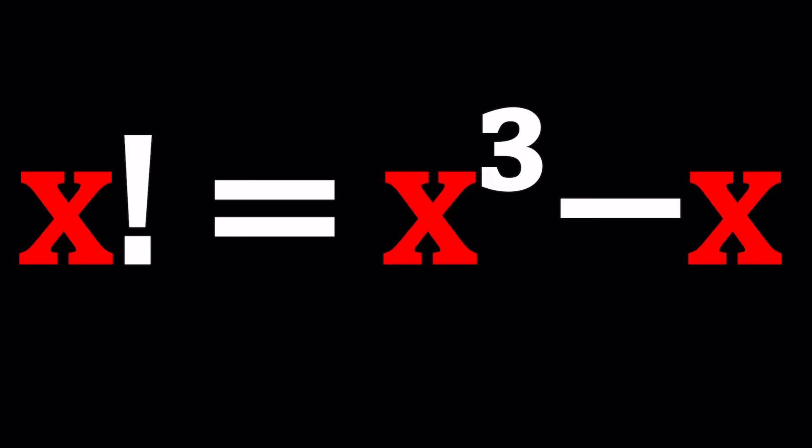Now, x factorial is a discrete function if you only consider non-negative integers. But if you consider real numbers using the gamma function, you can actually define factorial for all real numbers. And the graph is going to look like this.